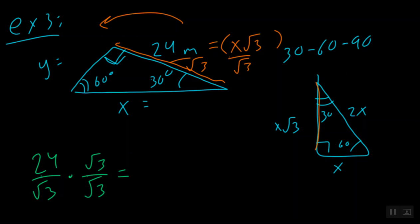And so, on the top, 24 times the square root of 3 is 24 square roots of 3. And on the bottom, we know that the square root of 3 times the square root of 3 is simply 3. Now, lastly, guys, of course, we want to reduce 24 over 3 if possible. And what is 24 divided by 3? Well, that is 8 square roots of 3.